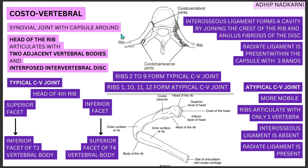The articulation at the costovertebral joint happens between the head of the rib and two adjacent vertebral bodies — the vertebra above and the vertebra below. The head of the rib has a superior articulating facet and an inferior articulating facet. The superior facet articulates with the vertebra above it, the inferior facet articulates with the vertebra below it, and in between there is the intervertebral disc.